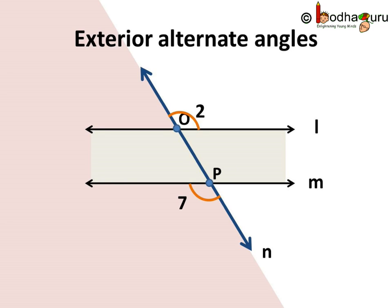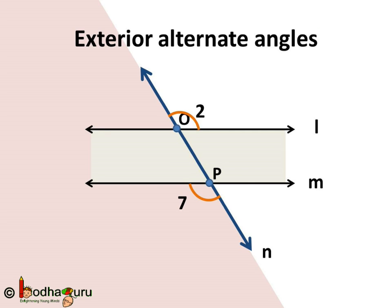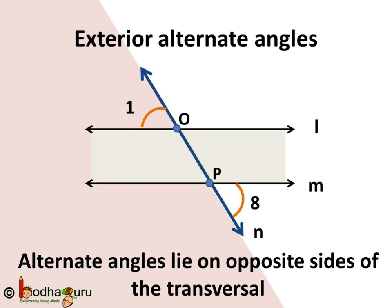Like interior alternate angles, there are exterior alternate angles too. For example, angle 2 and angle 7 are clearly exterior angles and they lie on the opposite sides of the transversal N, so these two angles are a pair of exterior alternate angles. Angle 1 and angle 8 are also exterior angles and they lie on the opposite sides of the transversal, so angle 1 and angle 8 are also alternate exterior angles.